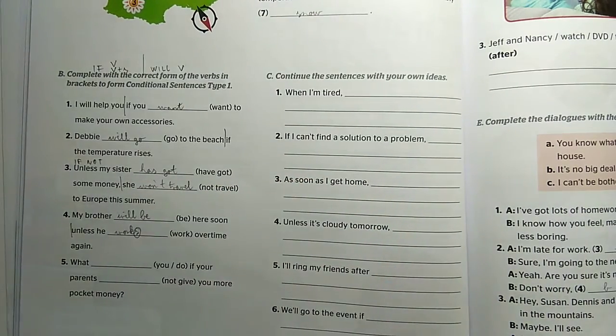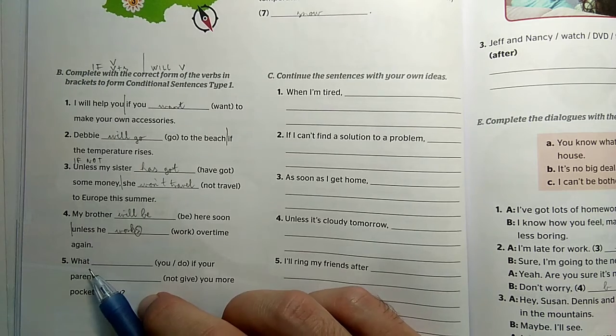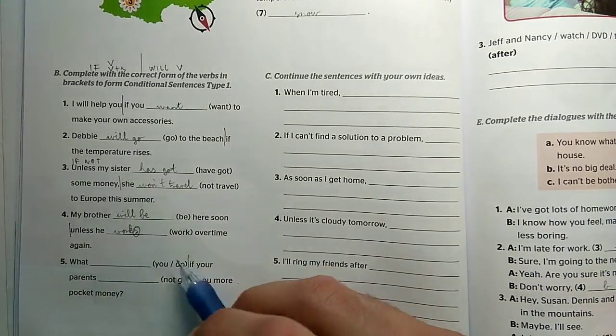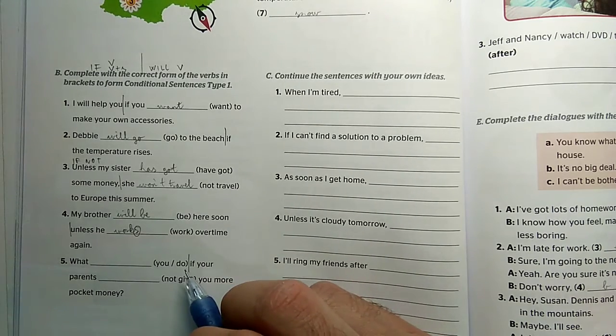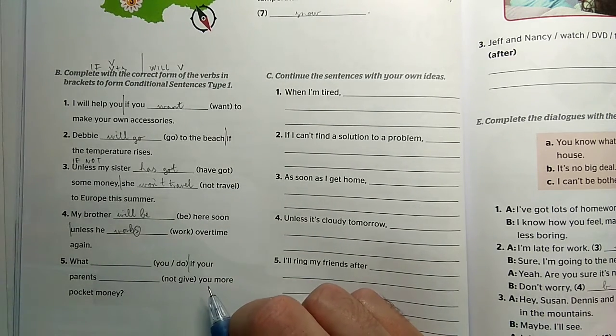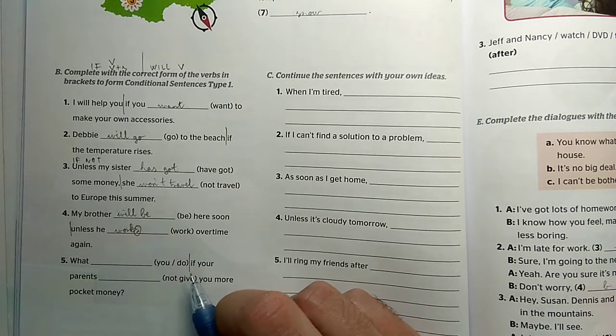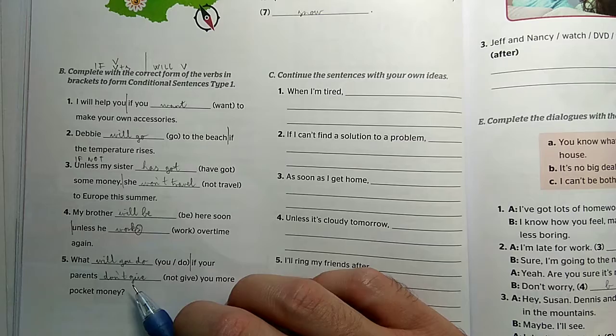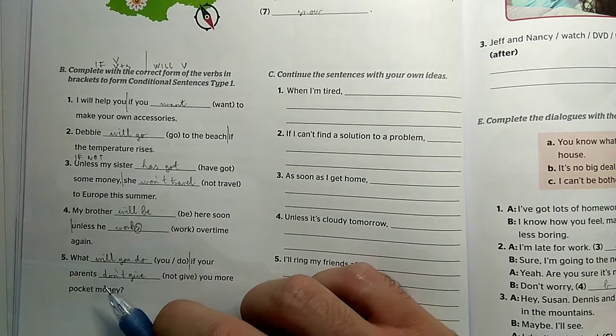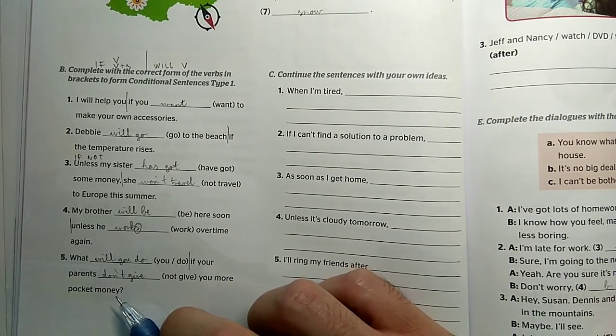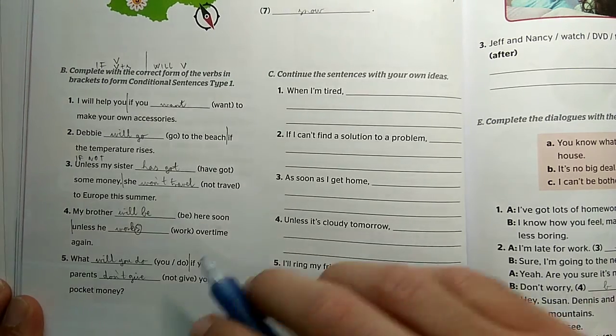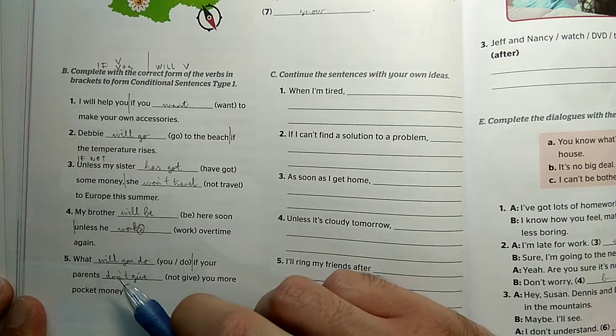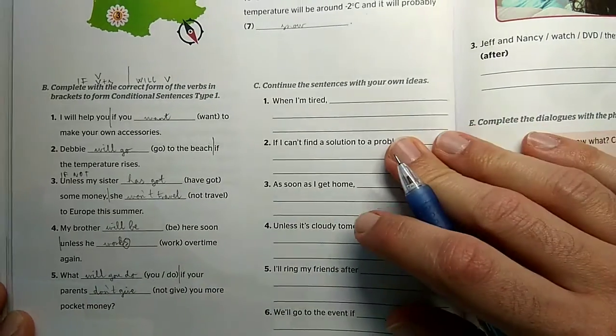We have a question in the non-if clause, so it will be a question in future tense. What will you do if your parents don't give you more pocket money? Here we'll have a negative sentence in present tense in the if clause. What will you do if your parents don't give you more pocket money? We put out the will and we have our question with a question word. We negate with don't give in simple present.